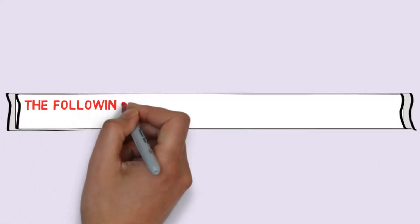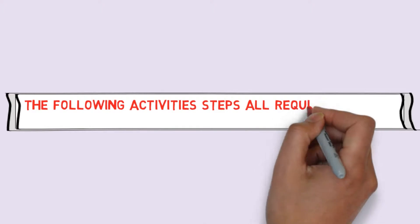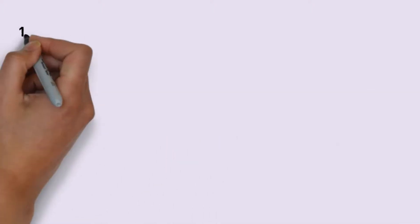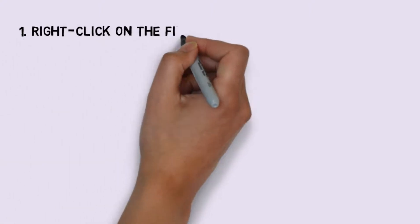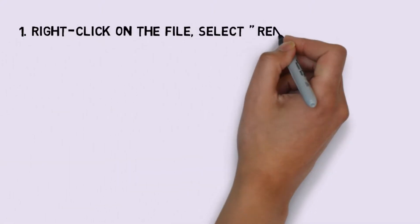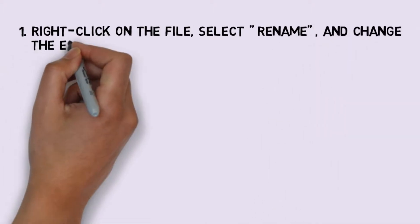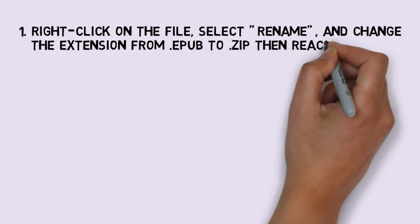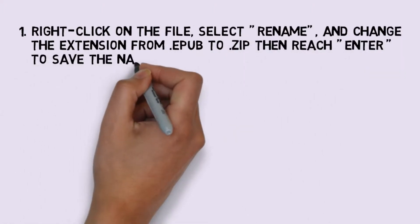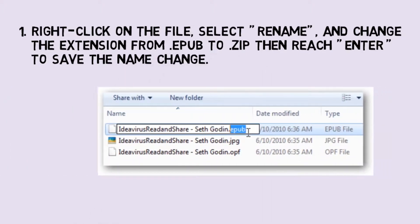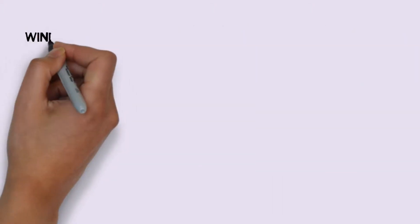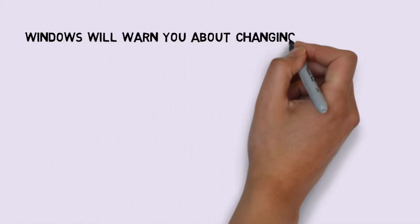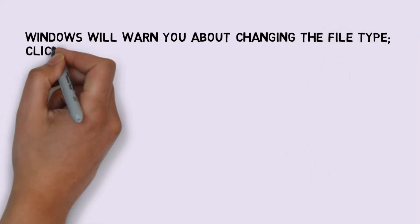The following steps require that you edit content in an EPUB file. Step 1: Right-click on the file, select rename, and change the extension from EPUB to ZIP. Then press enter to save the name change. Windows will warn you about changing the file type; click yes to proceed.